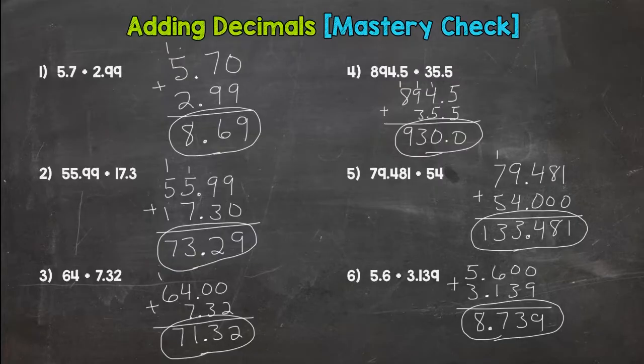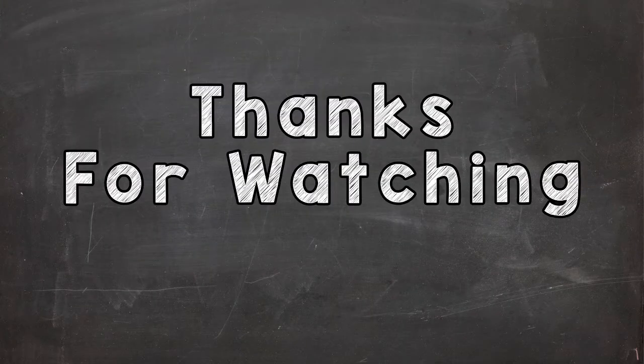So hopefully either five correct or six correct. So how'd you do? Hopefully in that range there. So that's the adding decimals mastery check. And hopefully you have it down. So once you get adding down, you are ready for subtracting decimals, which is very similar. But there's just a couple extra things we need to look out for. I dropped the links to subtracting decimals down in the description. So hopefully I will see you over at subtracting decimals. Thanks for watching.